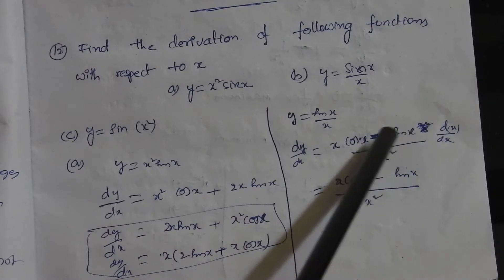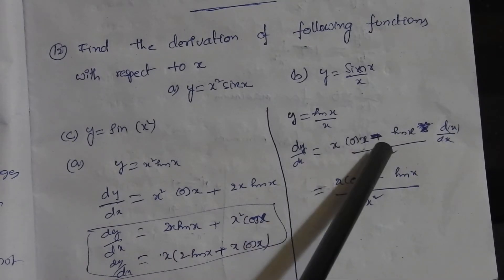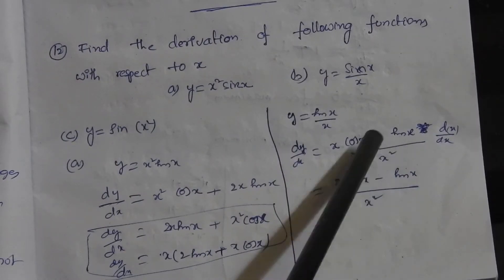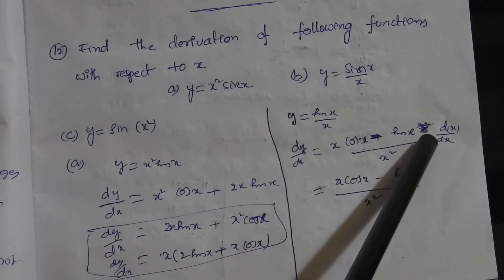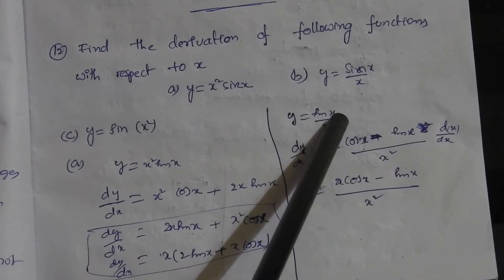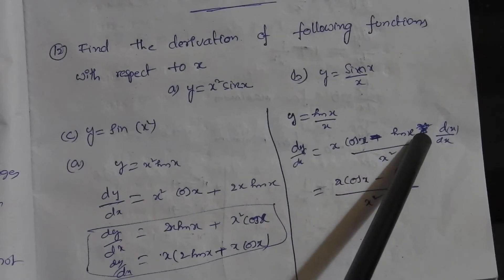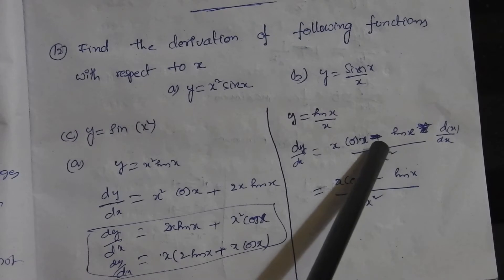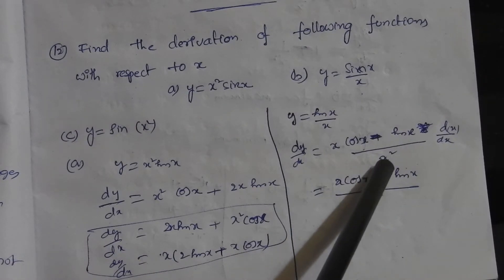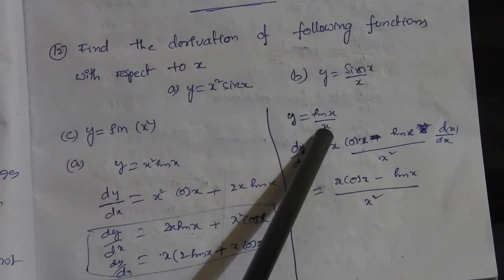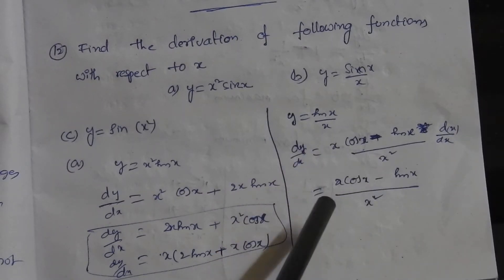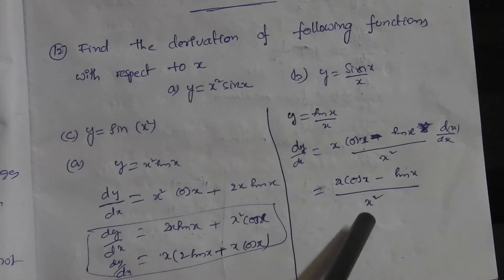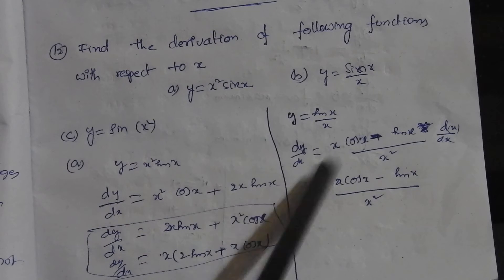Here x is taken common from both terms. From x squared and 2x we take x common, so we get x into 2 sin x plus x cos x. When x is taken outside, x squared becomes x, so x cos x remains.